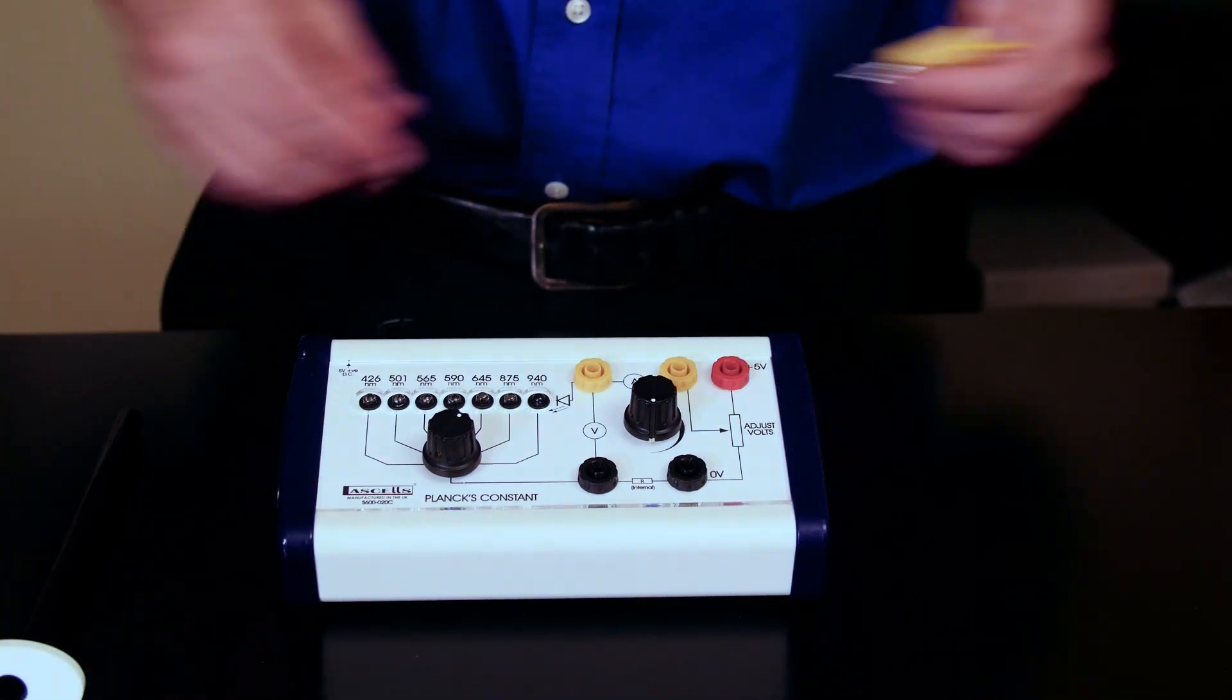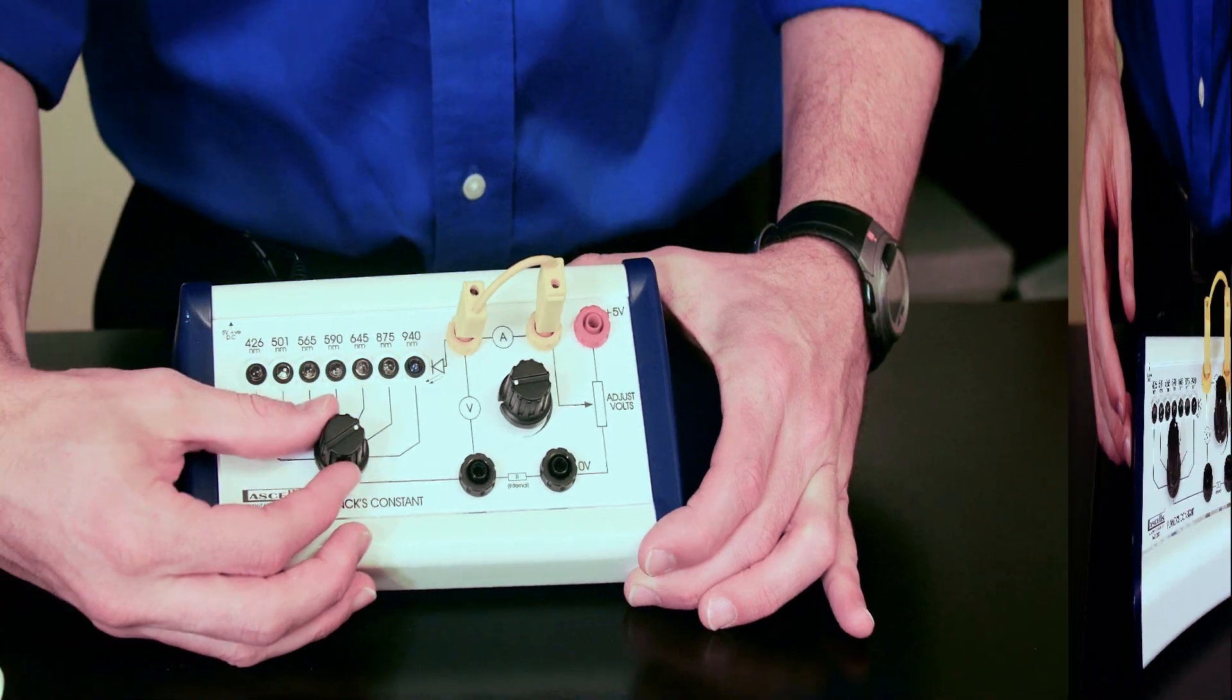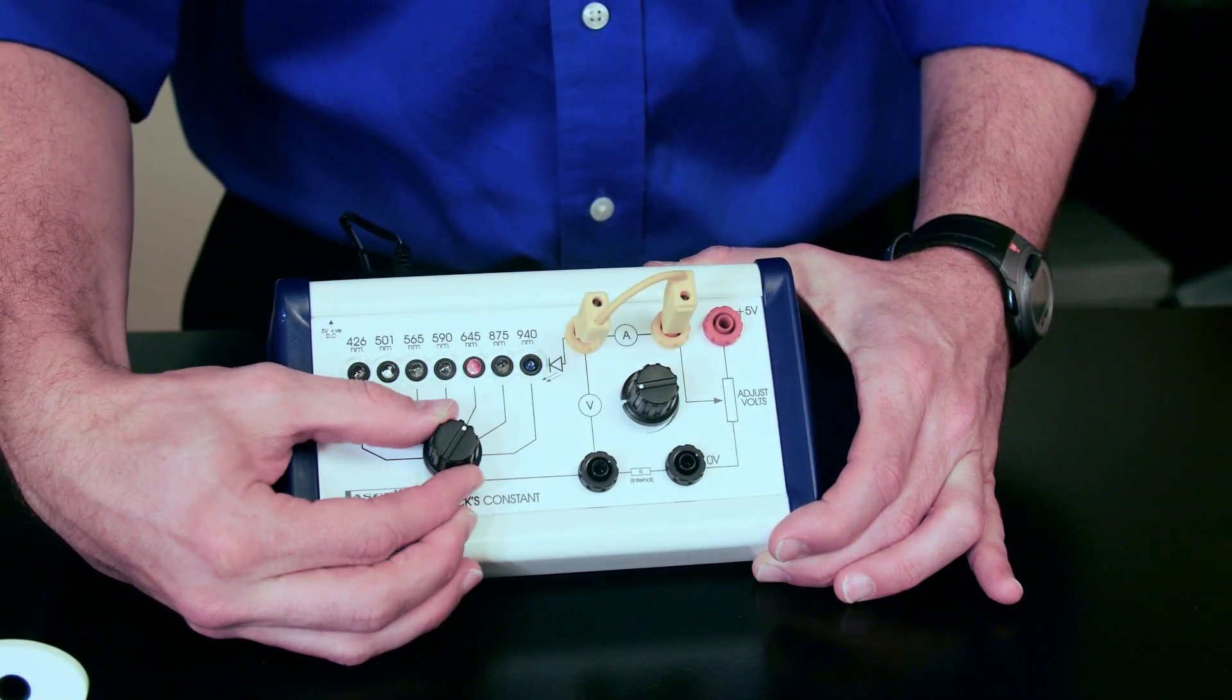When it's operating, you'll need to connect a wire across here or use an ammeter. Then, you'll see different amounts of voltages turning on different colored diodes.